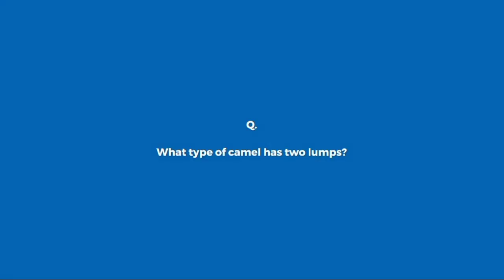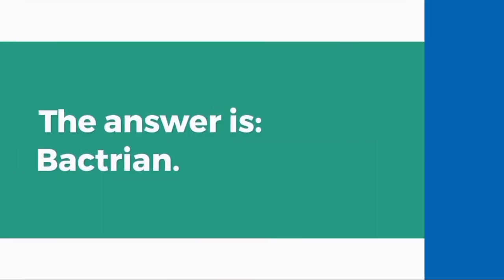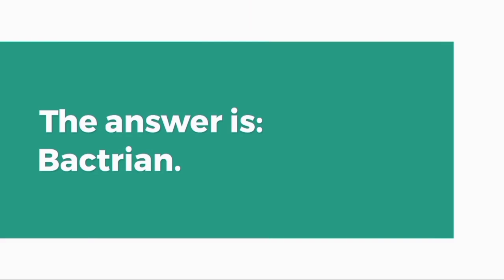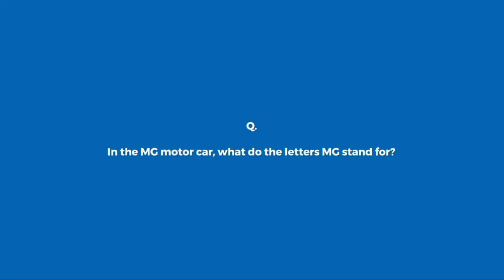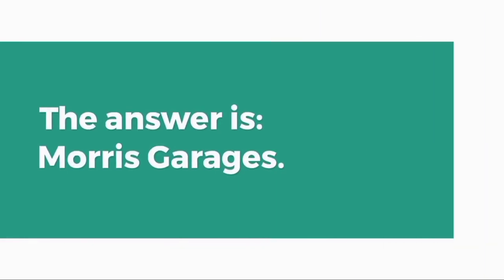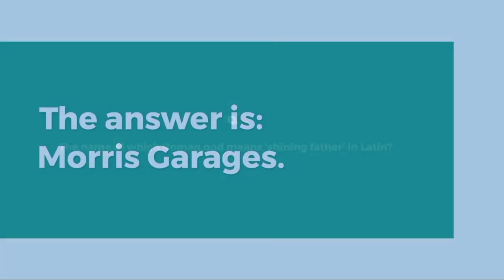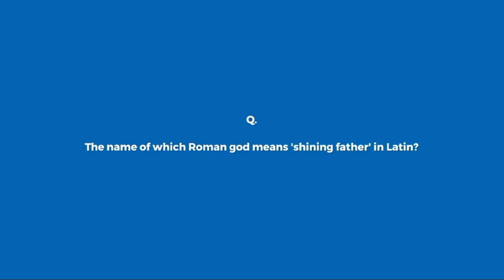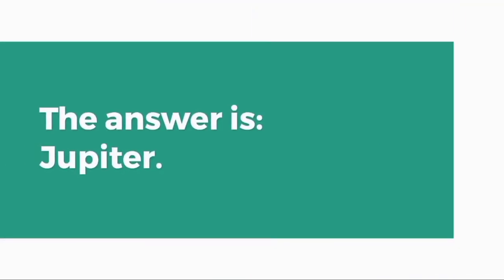What type of camel has two humps? Bactrian. In the MG motor car, what do the letters MG stand for? Morris Garages. The name of which Roman god means 'shining father' in Latin? Jupiter.